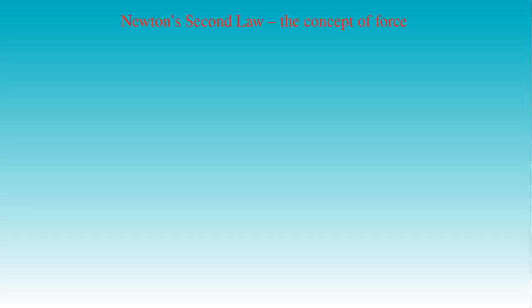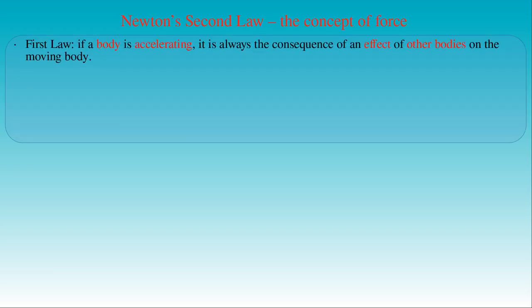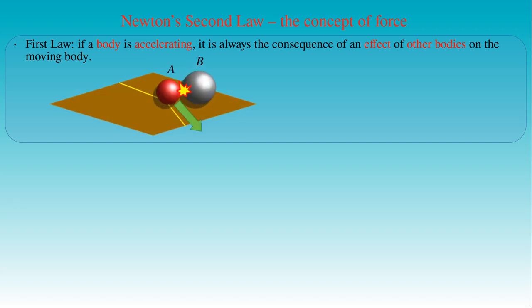In order to discuss Newton's second law of motion, we need to introduce the concept of force and dynamics. According to the first law, the acceleration of a body is a manifestation of some effect of other bodies. If the velocity of a body is changing — that is, if the body is accelerating — it is always the consequence of an effect of other bodies on the moving body. In this example, the moving ball A collides with ball B; as a result of the collision, ball A changes its speed in the direction of its motion, meaning ball B had an effect on ball A.